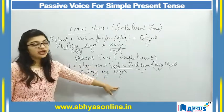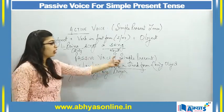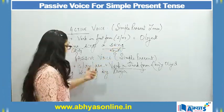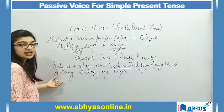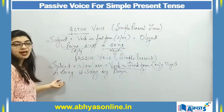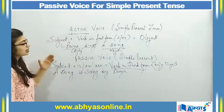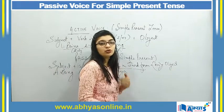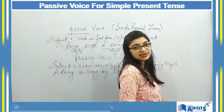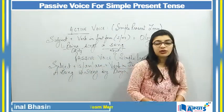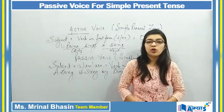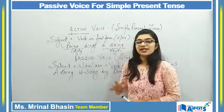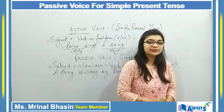So you can see that Priya was the subject in active voice but becomes the object in passive voice, and the object of active voice becomes the subject in passive voice. This is how we convert from active to passive voice. That was a basic example.